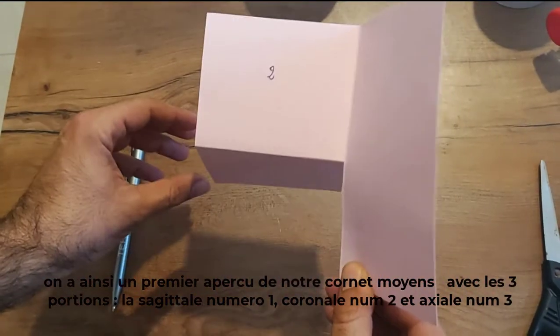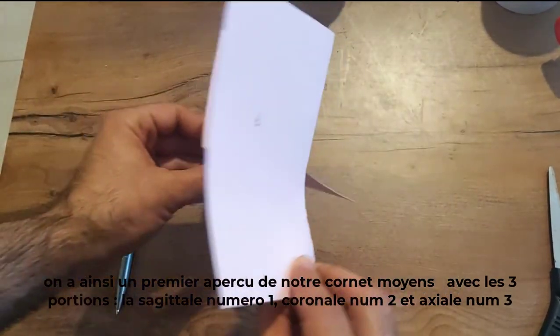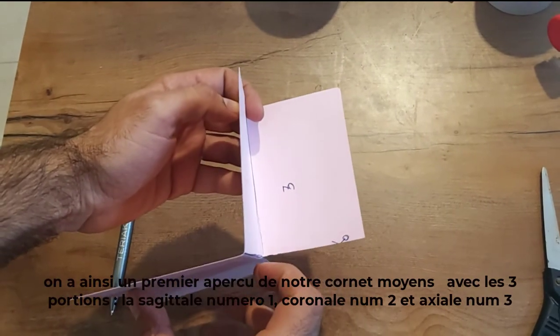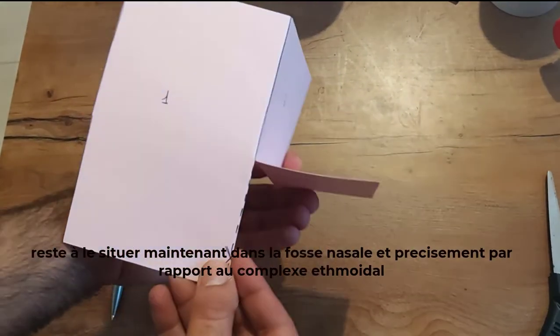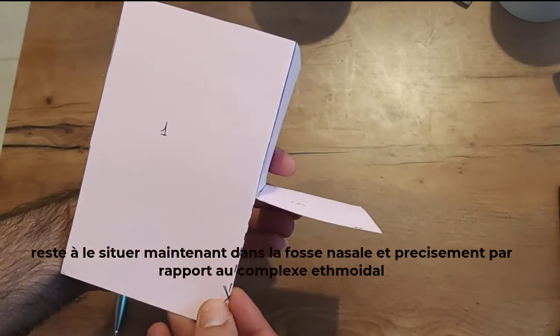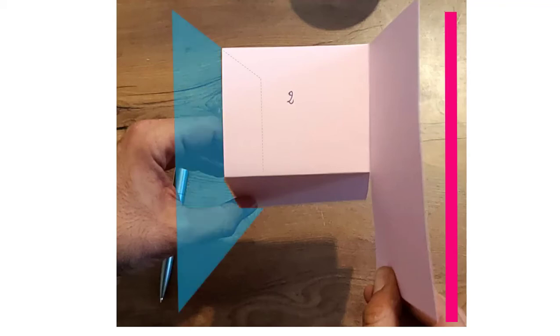The middle turbinate has three portions: the sagittal number one, coronal number two, and axial number three. It remains for us to locate the middle turbinate into the nasal cavity, precisely into the ethmoidal complex. Imagine now you're entering the right nasal cavity. You will face the second portion of the turbinate.